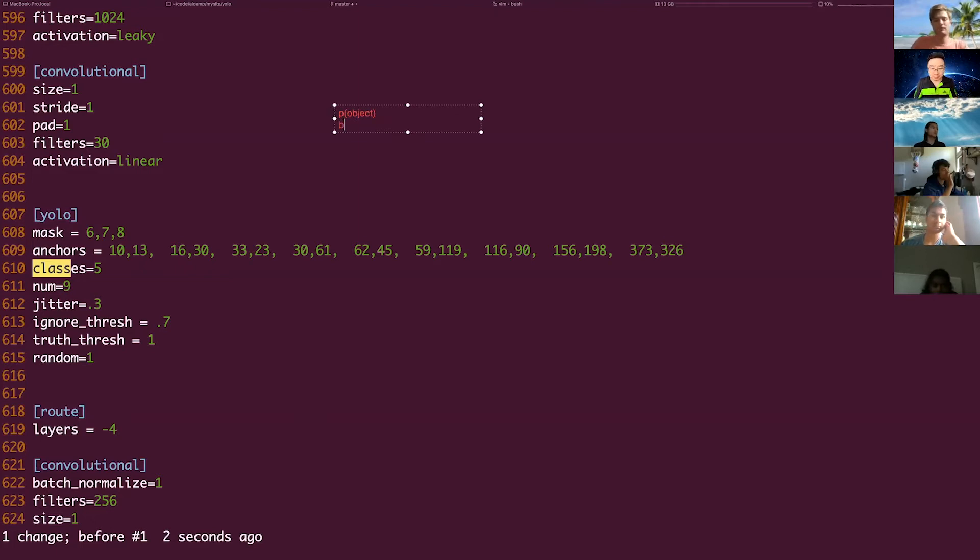So think about this, okay? So you have P object and what else you have? You have bounding box X, bounding box Y, bounding box width, bounding box height. These guys. And you have class 1, class 2, class 3, class 4, and class 5. In our case, we have 5 classes. Correct?